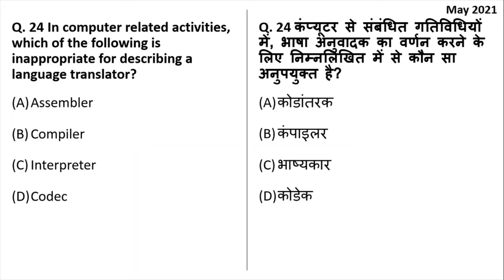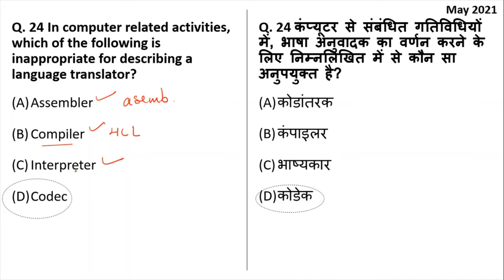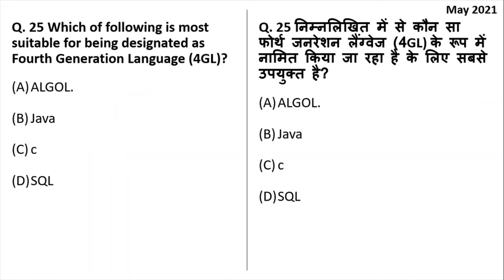Which of the following is inappropriate for describing a language translator? An interpreter is a language translator. An assembler translates assembly language. A compiler translates high-level languages. However, a codec is not a kind of language translator — codec is the incorrect option. Interpreter translates statement by statement, compiler does it in one go, and assembler also translates. A very important question: the most suitable fourth-generation language is Java — the right answer is option B.